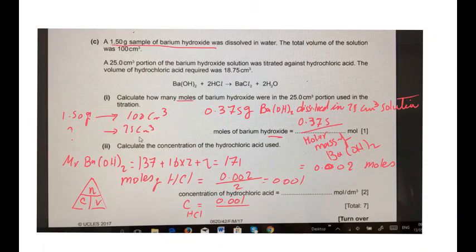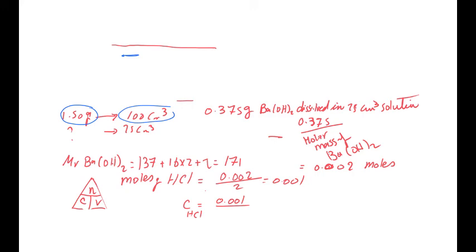In this question, a 1.5 gram sample of barium hydroxide dissolved in water. The total volume was 100. This means that we have 1.5 grams dissolved in 100 cm³ of water.